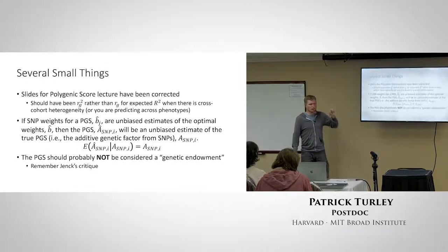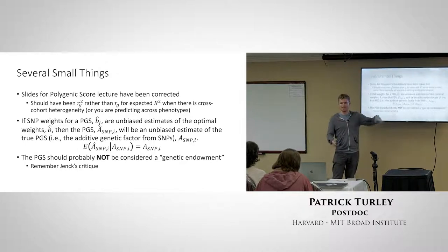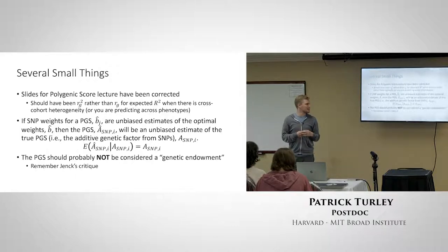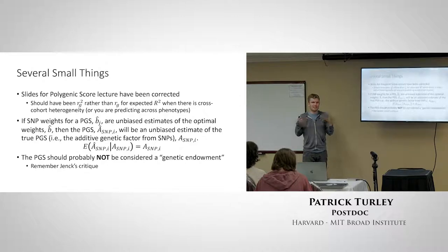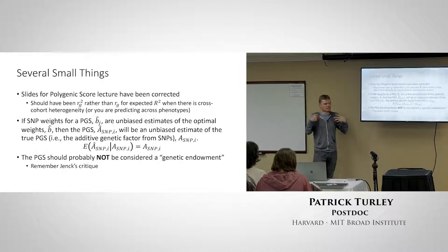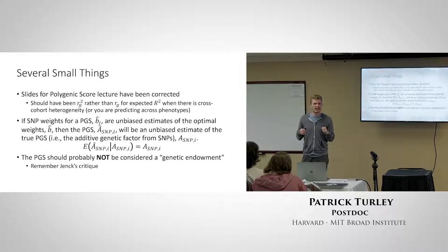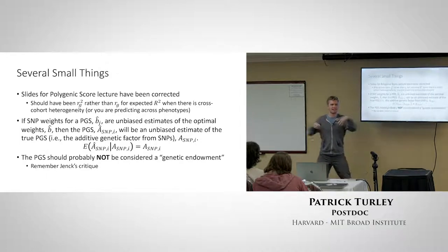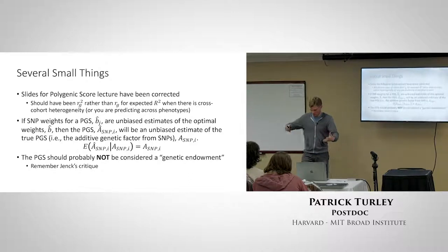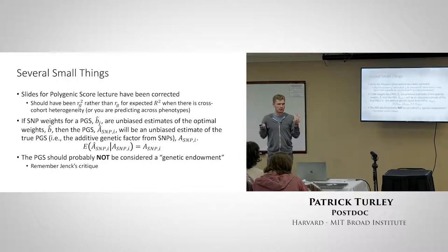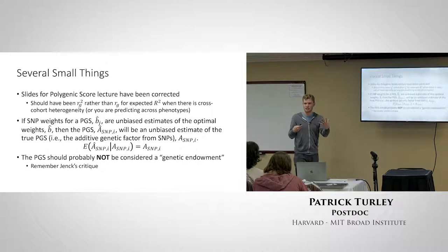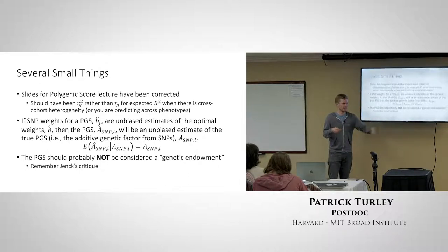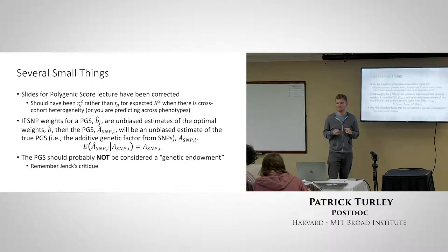In a lot of papers, people talk about a 'genetic endowment' — they say the polygenic score is a person's genetic endowment. The problem is that when we say this, and even when people hear it, we're thinking it means some innate biological thing — that the polygenic score represents my biological risk of getting higher education. That's not actually the case. You could call it a genetic endowment if you're also willing to say being male is a genetic endowment. These genetic effects include complicated environmental things, so be very careful about that language.